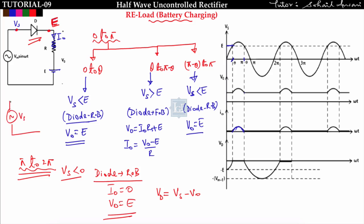To find voltage across the diode, apply KVL: V_D equals Vs minus V_naught. The diode voltage only appears when the diode is not conducting — open circuited — so current is zero, meaning V_naught equals E, giving V_D equals Vs minus E. From zero to theta, since the diode is open circuited, voltage across the diode is Vs minus E, which is negative since E is greater than Vs in this interval.